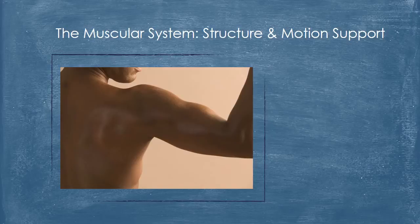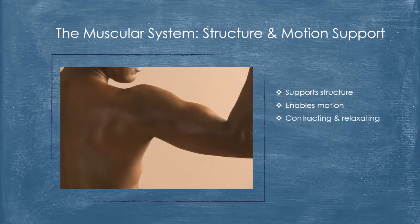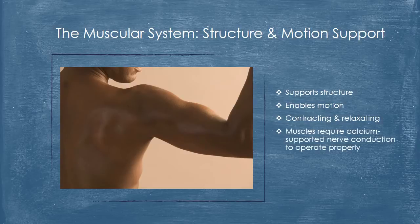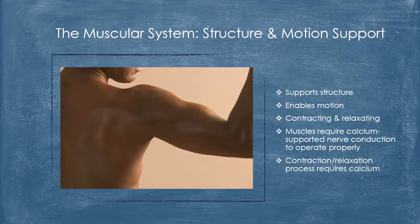The body's muscular system supports structure and enables motion. This is done by alternately contracting and relaxing certain muscle groups in set patterns. Calcium use is two-fold in this system. Primarily, muscles require proper nerve conduction to operate — the nerves must carry messages from the brain to the muscles to tell them what to do. No less important is calcium's use in the contraction-relaxation process.